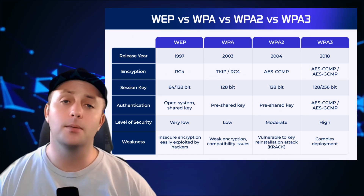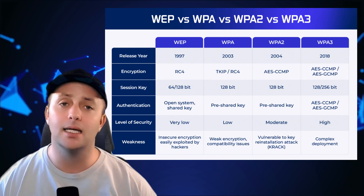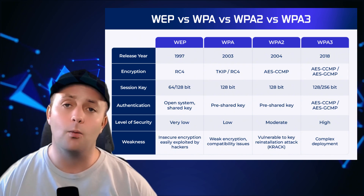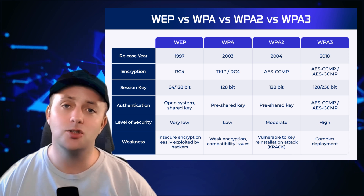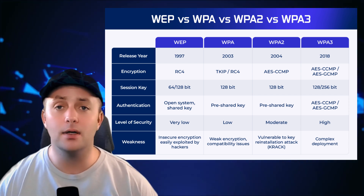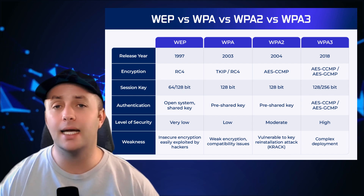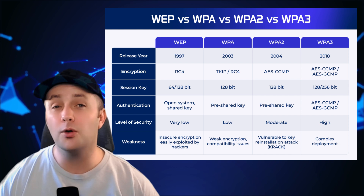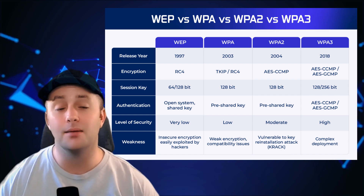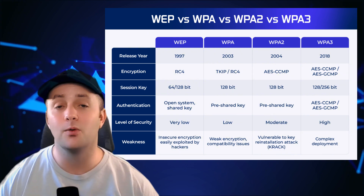Wi-Fi networks are secured using encryption protocols. The most common encryption standard today is WPA3, or Wi-Fi Protected Access 3, which provides strong security for your wireless network. If your router doesn't support WPA3, make sure it's using at least WPA2, as older protocols like WEP are no longer secure and can be easily compromised — remember, WEP gets whipped. Security is crucial for wireless networks because they're more vulnerable to attacks than wired networks. Without proper security, someone within range of your Wi-Fi signal could potentially intercept your data or even gain unauthorized access to your network.